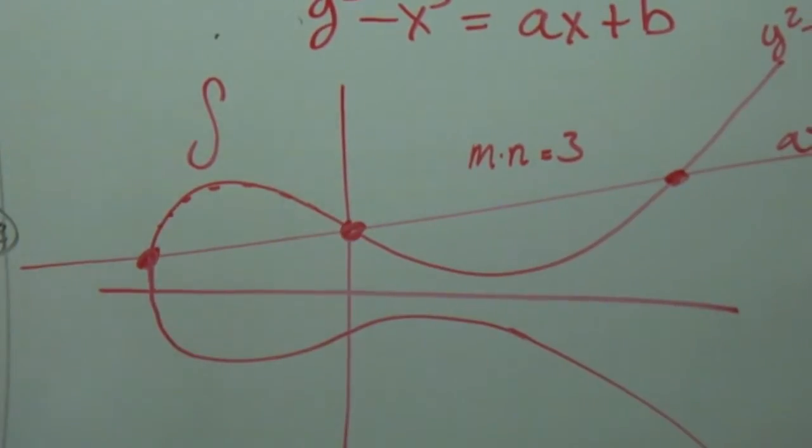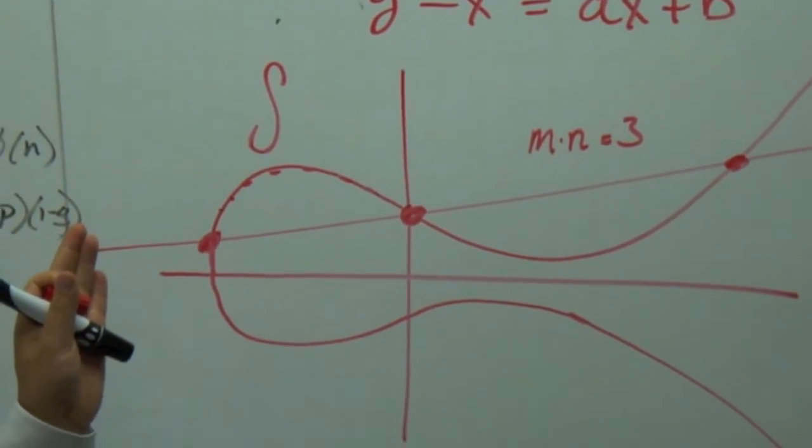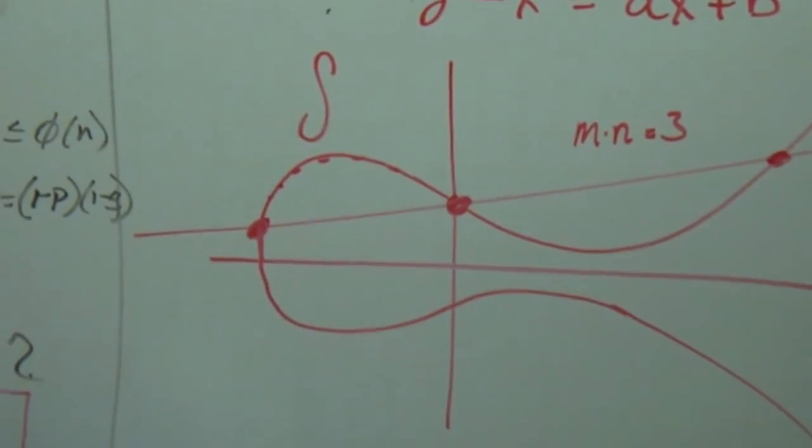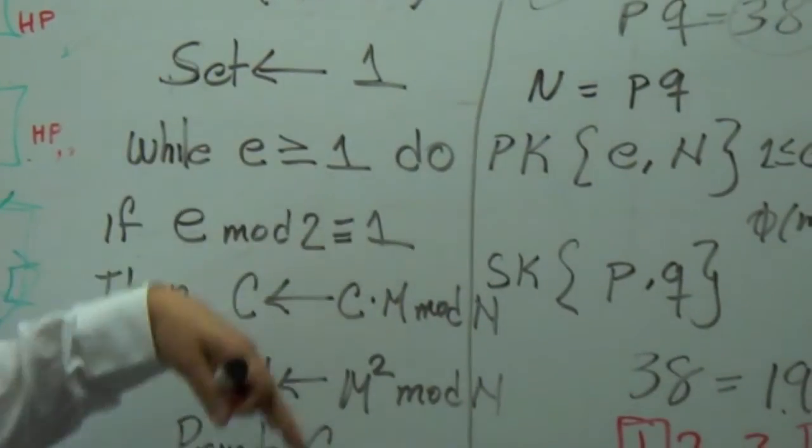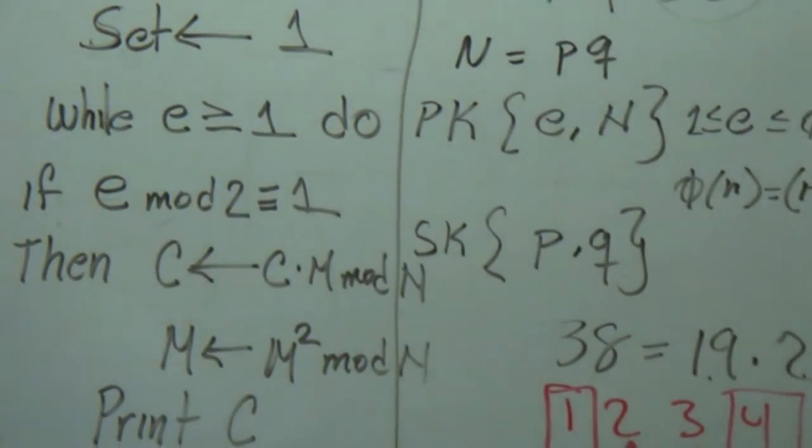And we're going to put the proof, the mathematical proof, the number theory proof, and also the algorithms for the parallel computing, if we start to do some debugging. Okay? Thank you.